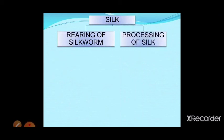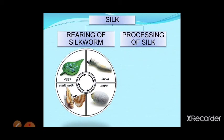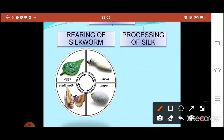To get silk, we first need rearing of silkworm — that means we have to grow the silkworm. We need to understand the life cycle of the silkworm: how it grows from the moth egg. The silkworm moth lays eggs, which hatch into larvae. The larva eats large amounts of mulberry leaves, and after about 25 to 30 days of eating, it stops and becomes ready to spin the cocoon.